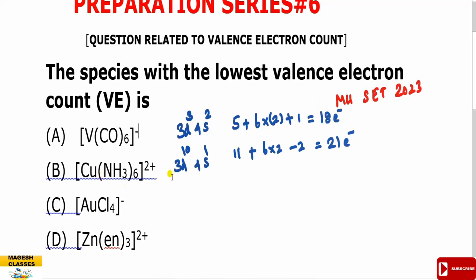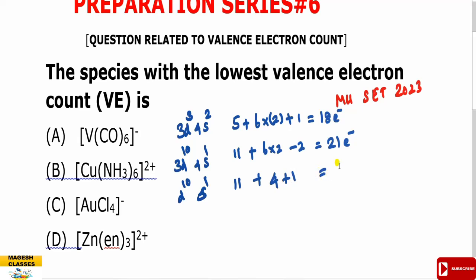Gold has the same configuration but belongs to the 6th period. So, the outer configuration is d¹⁰ and s¹, so it is also having 11 electrons. And Chlorine gives 1 electron each — with 4 chlorines that is 4 electrons — and the negative charge adds 1. So, totally it is 11 plus 4 plus 1 equals 16 electrons.